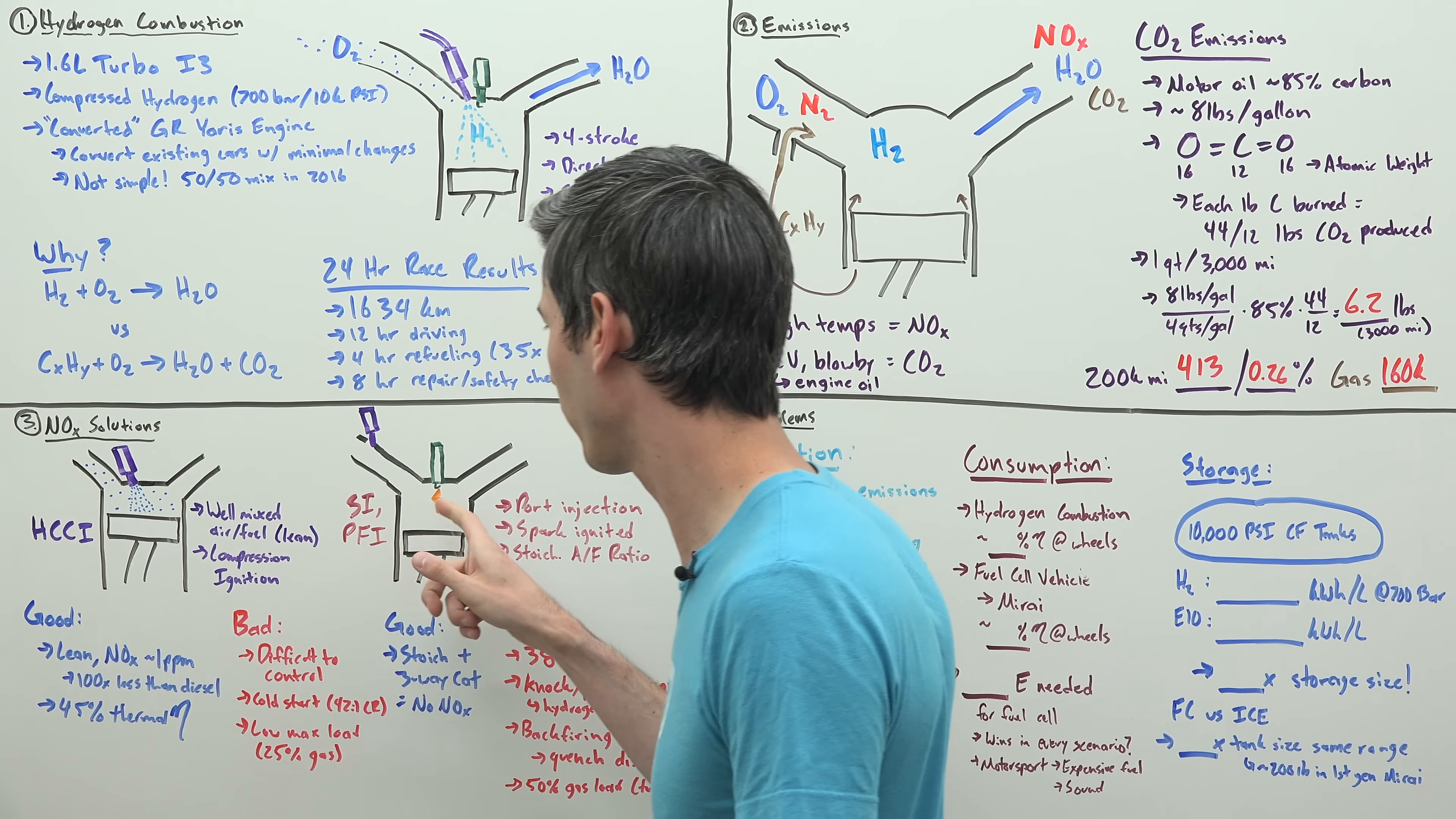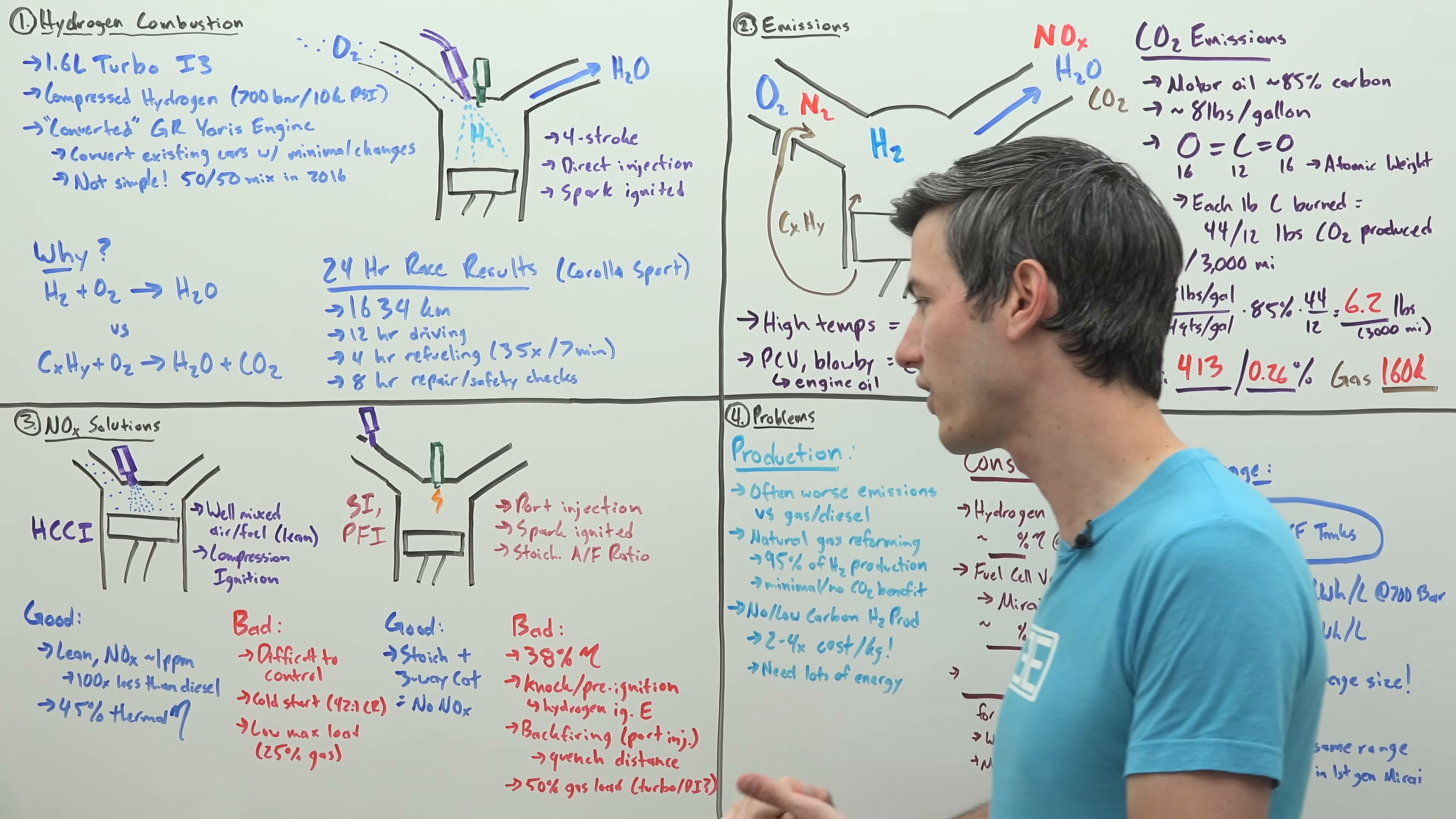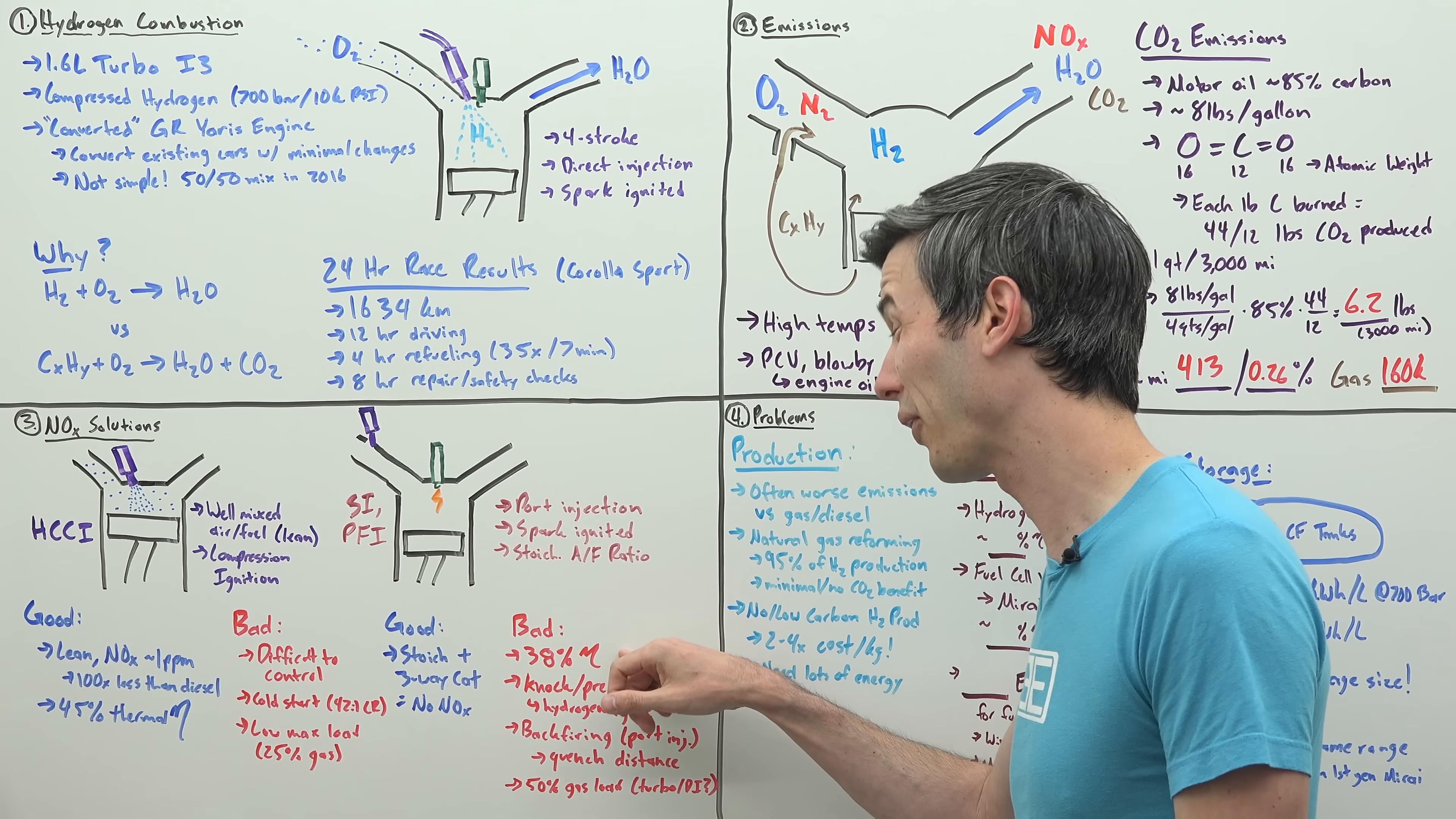Another solution: what if you just use spark ignition and port fuel injection? The good news is you don't really have nitrogen oxide emissions, assuming you operate at stoichiometric air fuel ratio with hydrogen and oxygen, and you use a three-way catalytic converter. The bad news is it's not as efficient as HCCI. Peak efficiency is around 38%.